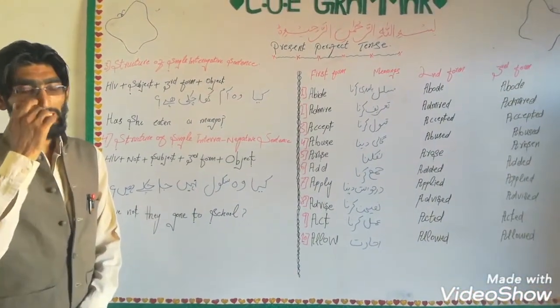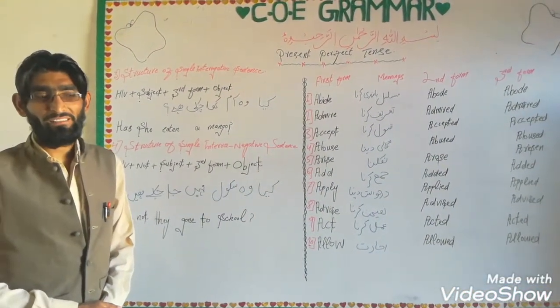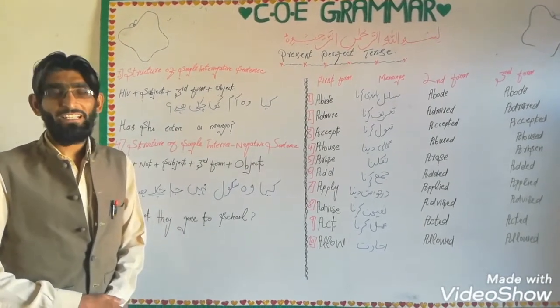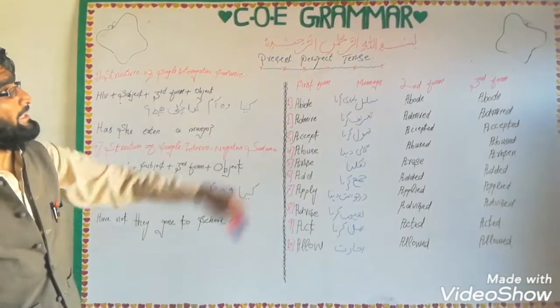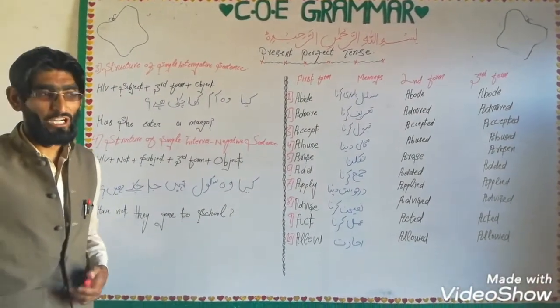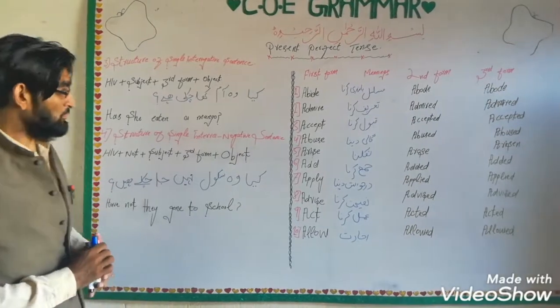Start with the name of Allah who is the king of kings and the master of masters, who is the most beneficial and the most merciful. Welcome back to our COE grammar, classification of English grammar. Today we have the remaining topic of the present perfect tense.